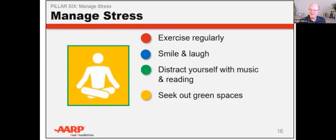Our last pillar, pillar six, is managing stress. Managing stress includes regular exercise that relieves the mental and physical effects of stress. Smiling and laughing releases hormones and brain chemicals that balance the effects of stress — Sheila tries laughter yoga with YouTube videos, which she says is a lot of fun and great stress relief. Distracting yourself with music or reading can stop you from going over the same problems repeatedly. If you can, seek out green spaces and spend time outdoors when it's safe to do so, checking your local government's rules during COVID.